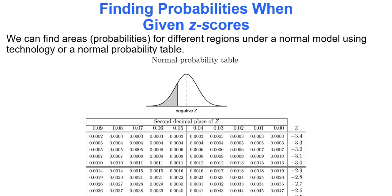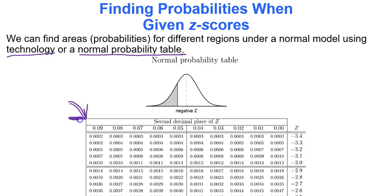We have two options to find the area under the curve, or probabilities. We can use technology, which we'll get to, or like they did old school style before sophisticated technology, they used something called a normal probability table. There's a bunch of calculus behind the normal probability table, so fortunately they created the table to do all the hard work for you. I'm going to introduce you to the table, and then make your life easier by introducing technology — using Google Sheets to calculate the probabilities.